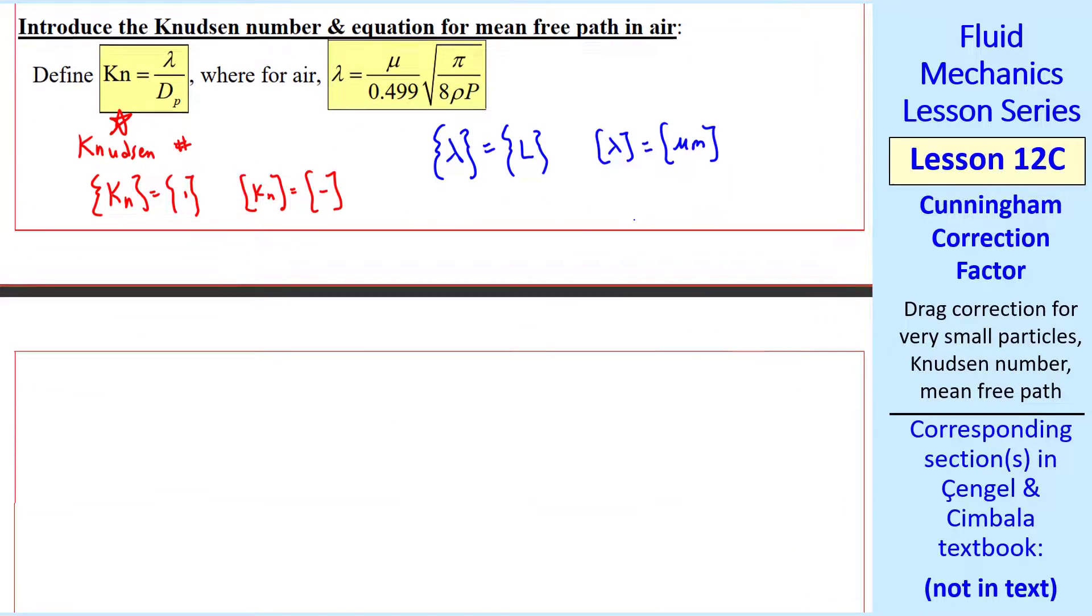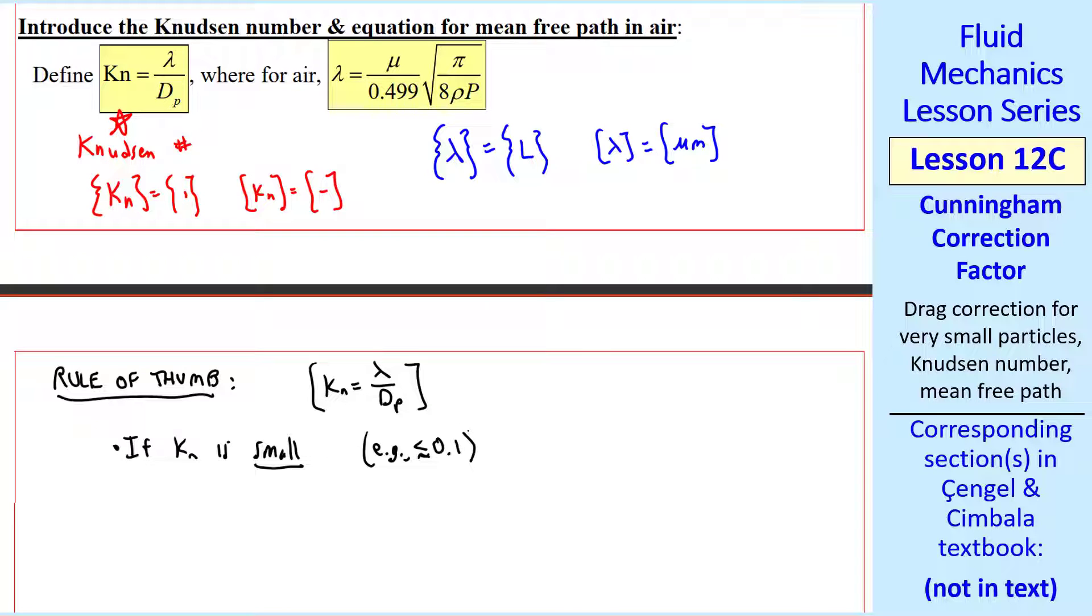Here's a rule of thumb for this Knudsen number. If Knudsen number is small, for example, less than about 0.1, dp is greater than lambda.